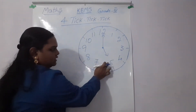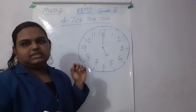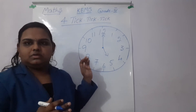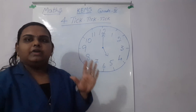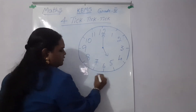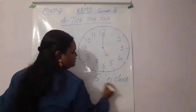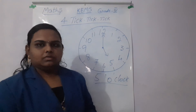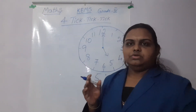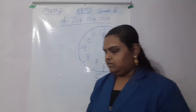5 represents the hour and 12 represents the minutes. So the time is 5 o'clock. You all know how to see the time — this time represents 5 o'clock.